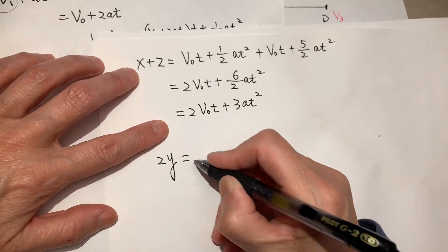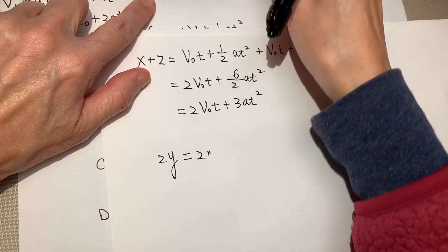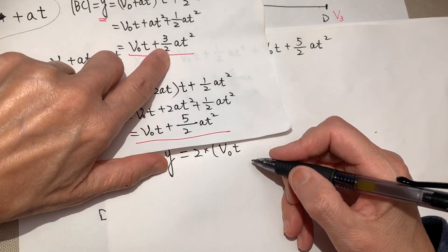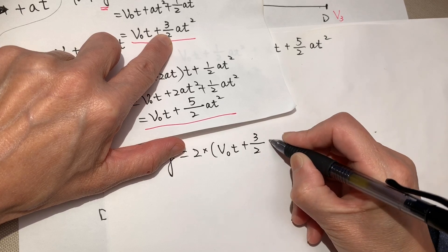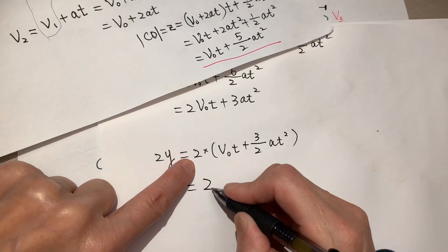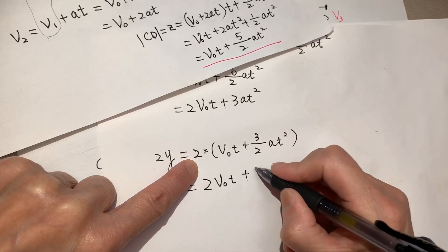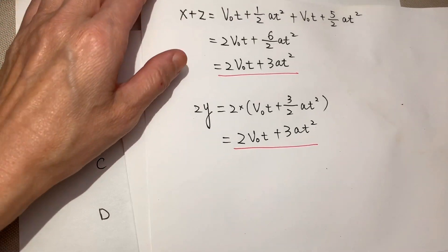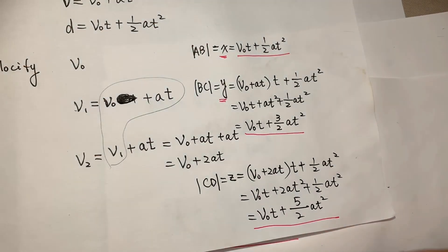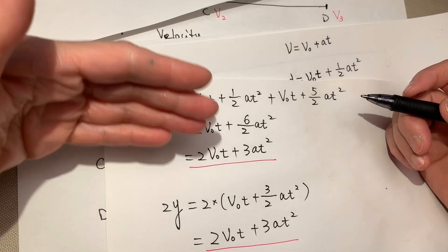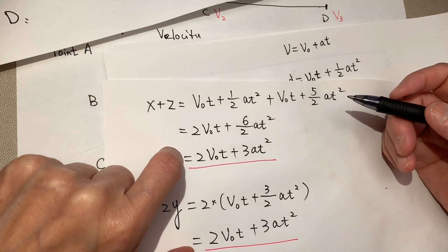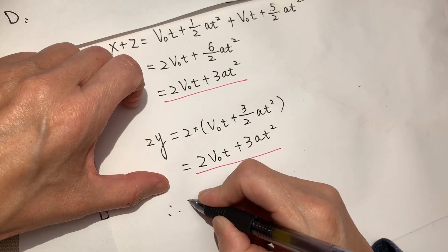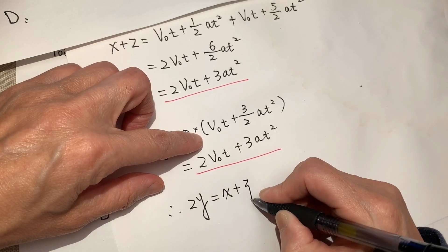Okay, now 2Y equal to 2 times Y. Y is V0T plus 3 over 2 AT square. Equal to 2V0T plus 3AT square. So it is the same. So we use logical proofing, we use logical rationalization. And until we get from left side, from right side, we get into the equal result. So our hypothesis is right. Therefore, 2Y equal to X plus Z. Okay.